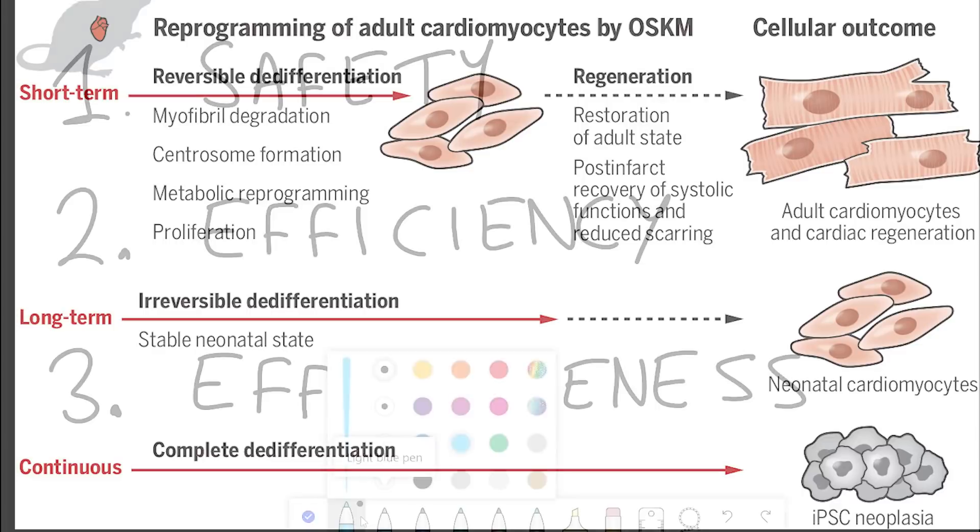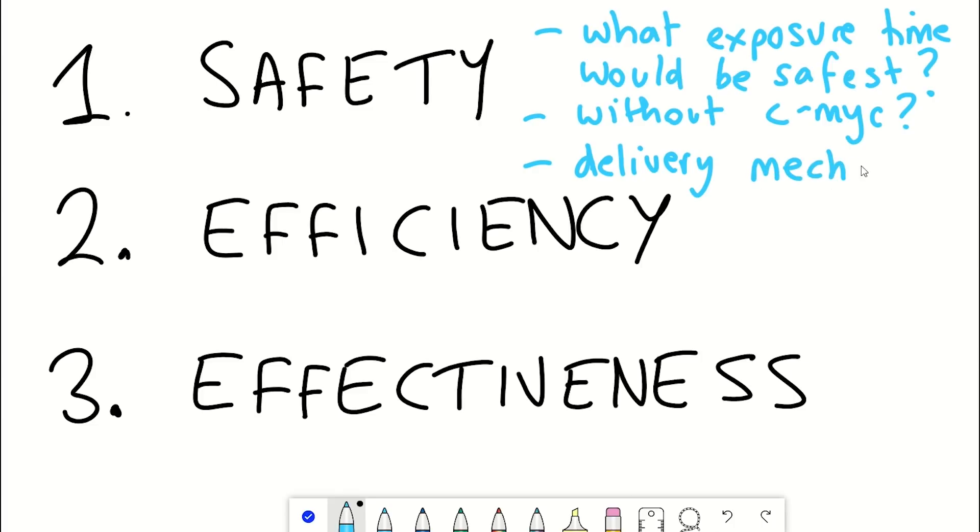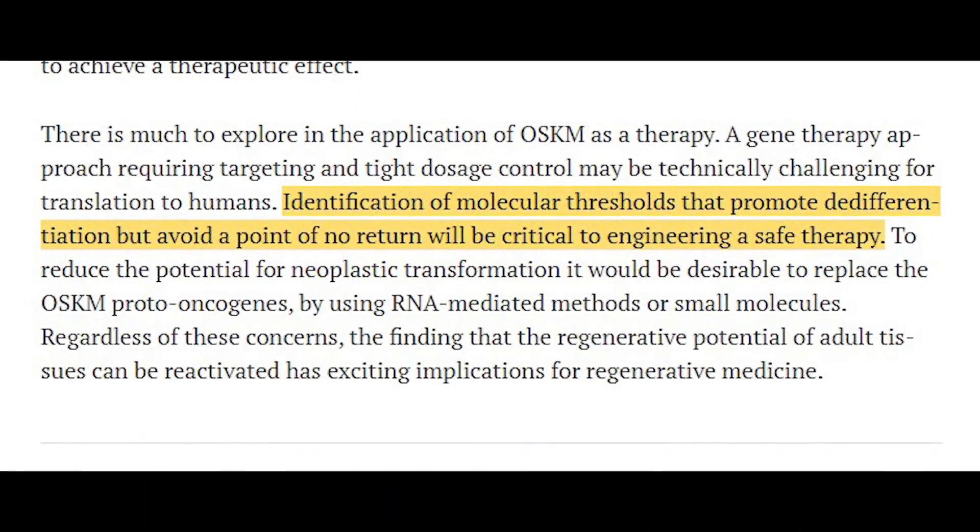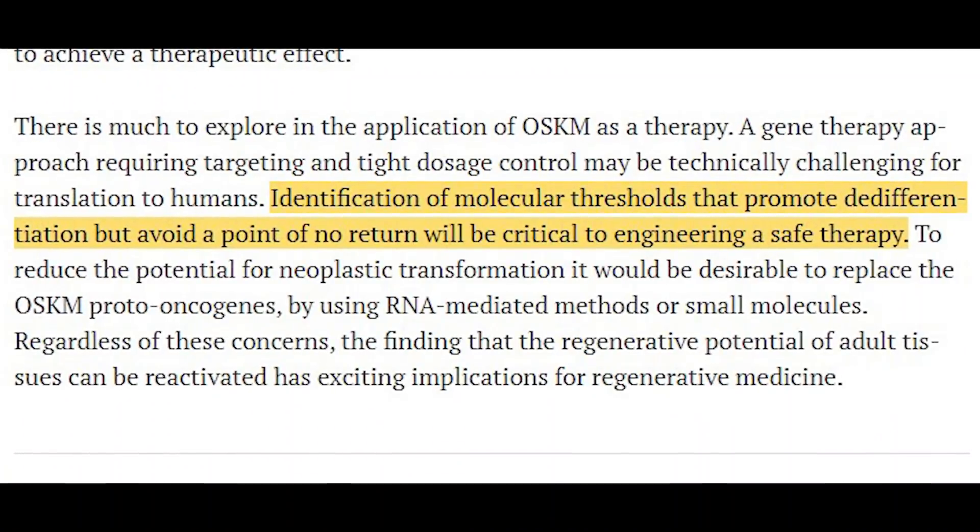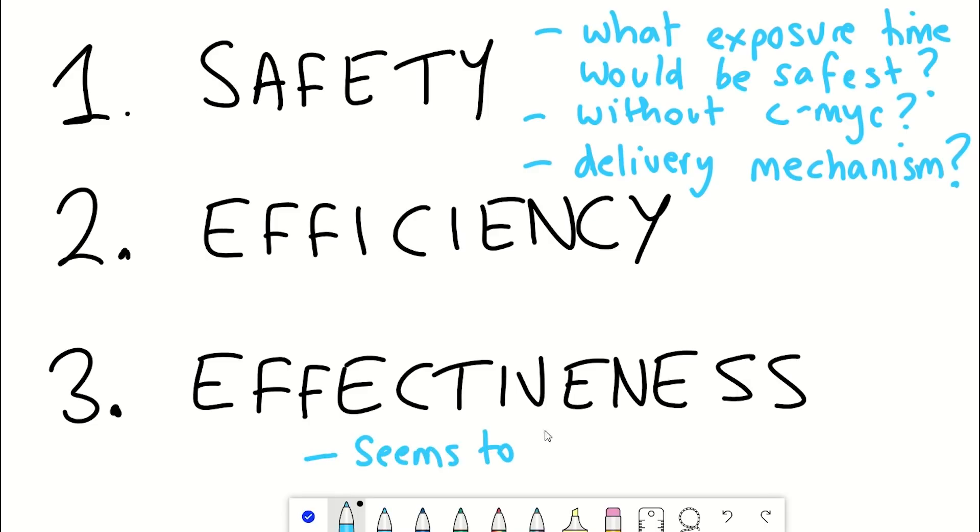Now, many challenges lie ahead. This was done in mice. How long exposure would be safest and most effective for humans? Is there a way that this can be done without c-MYC, the factor that is commonly overactive in cancer? What would be the best delivery of these factors into human patients? Obviously, if both targeting and tight dosage needs to be carefully assessed, this may pose many challenges for human translation. As identification of molecular thresholds that promote de-differentiation but avoid a point of no return will be critical to engineering a safe therapy. But what is most exciting is that there is evidently regenerative potential.